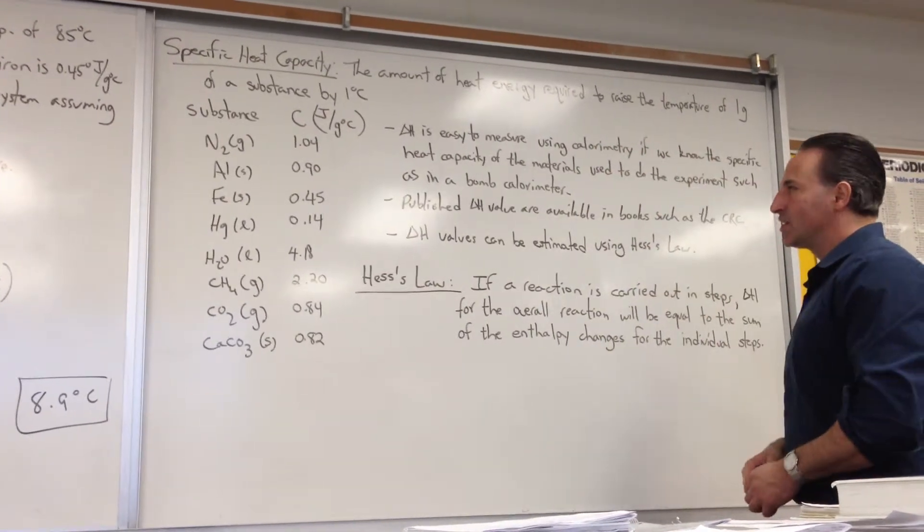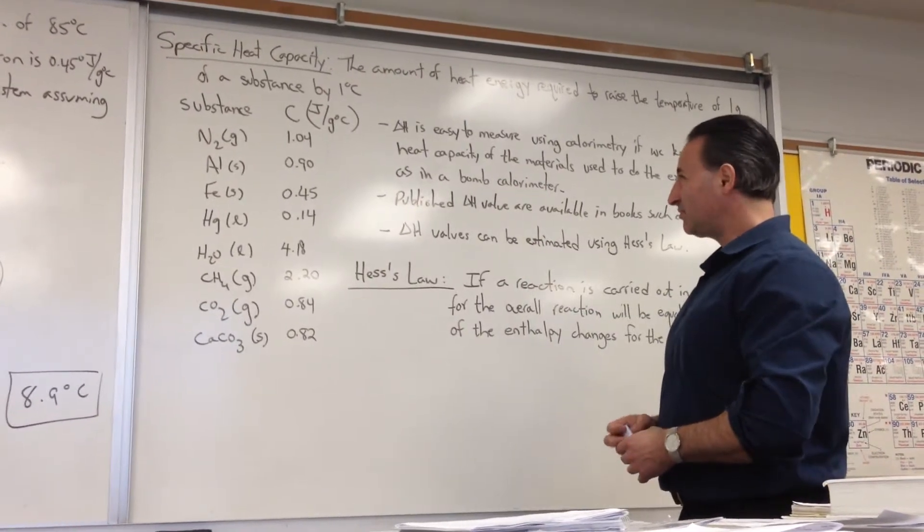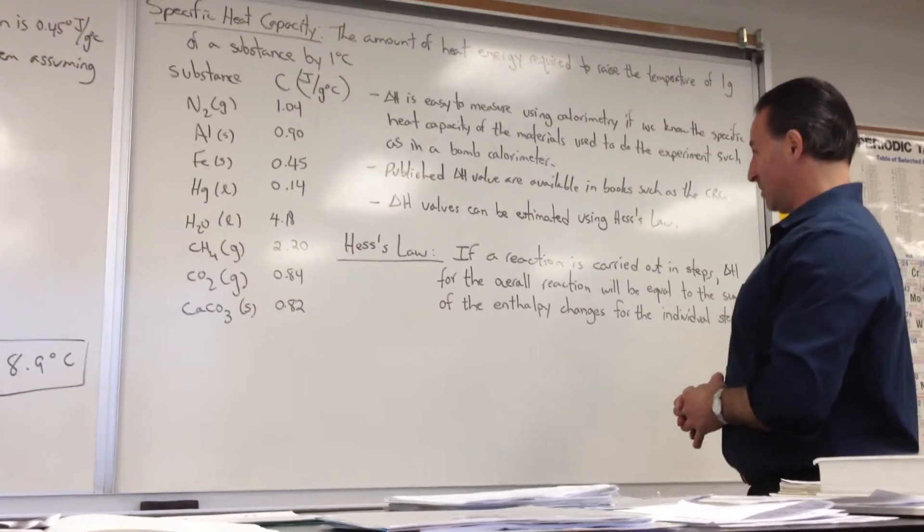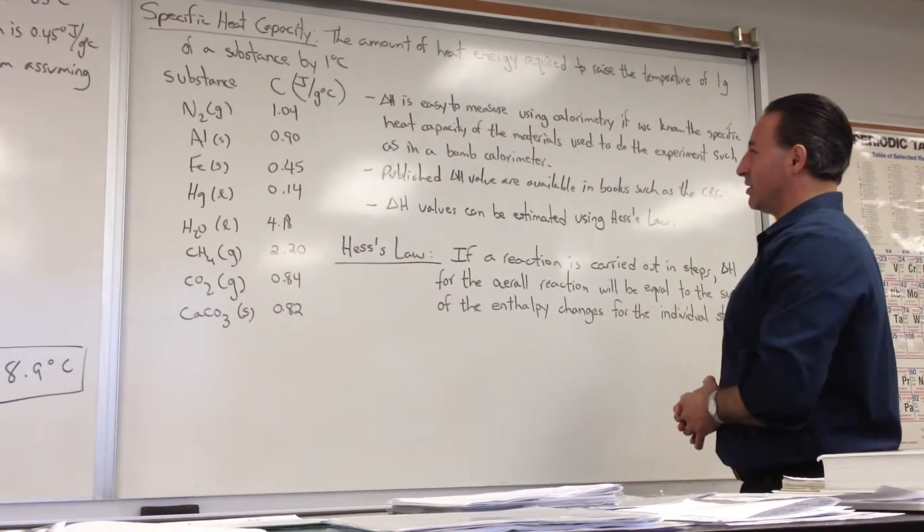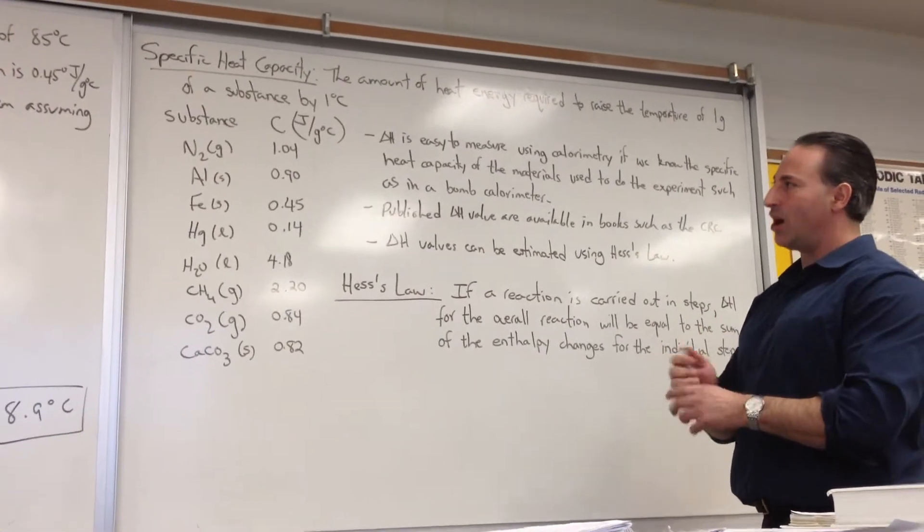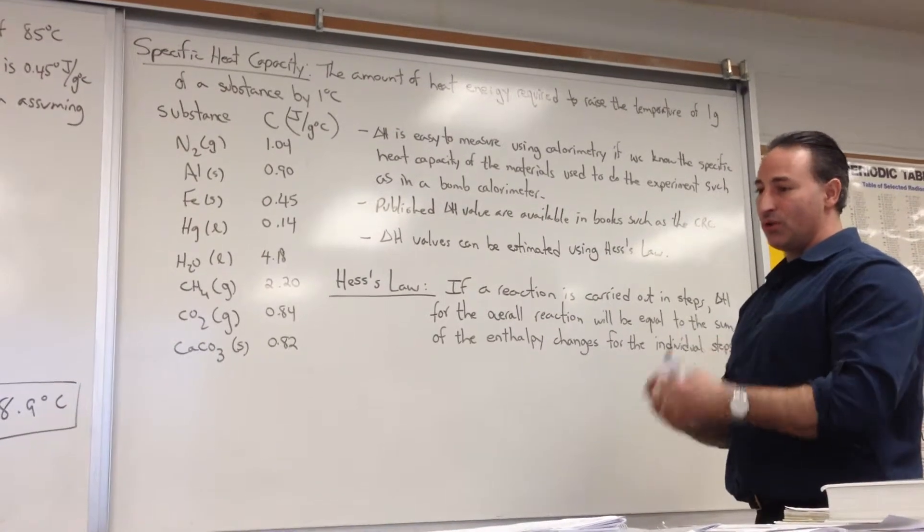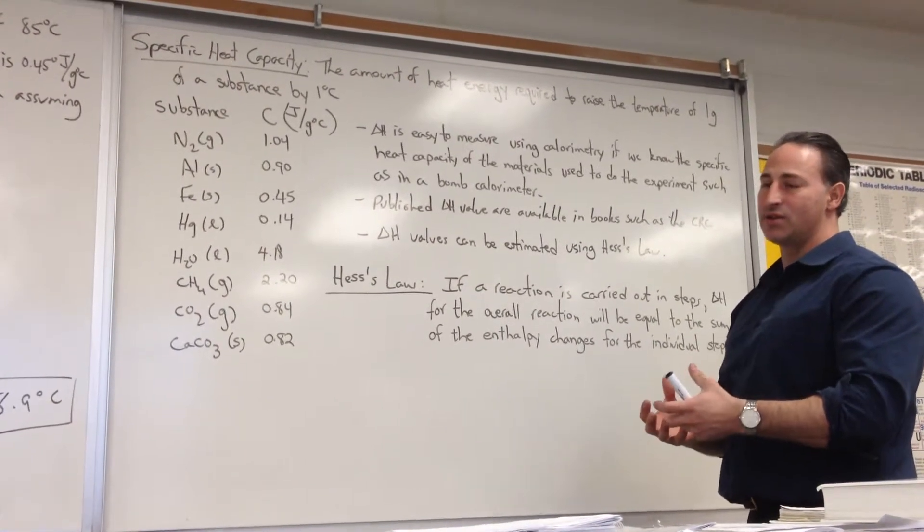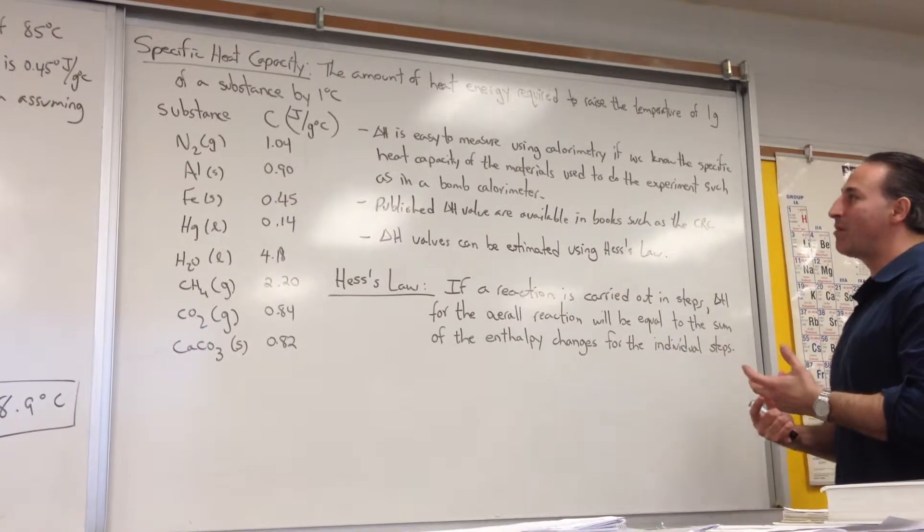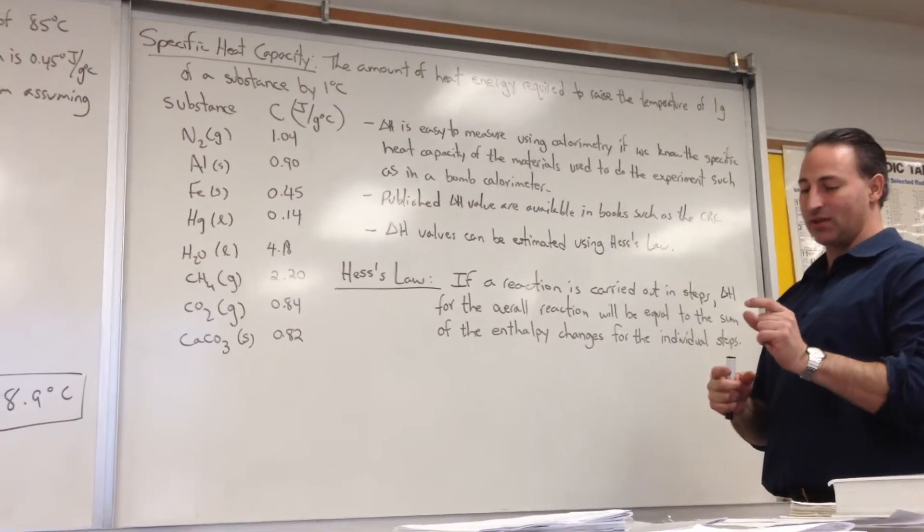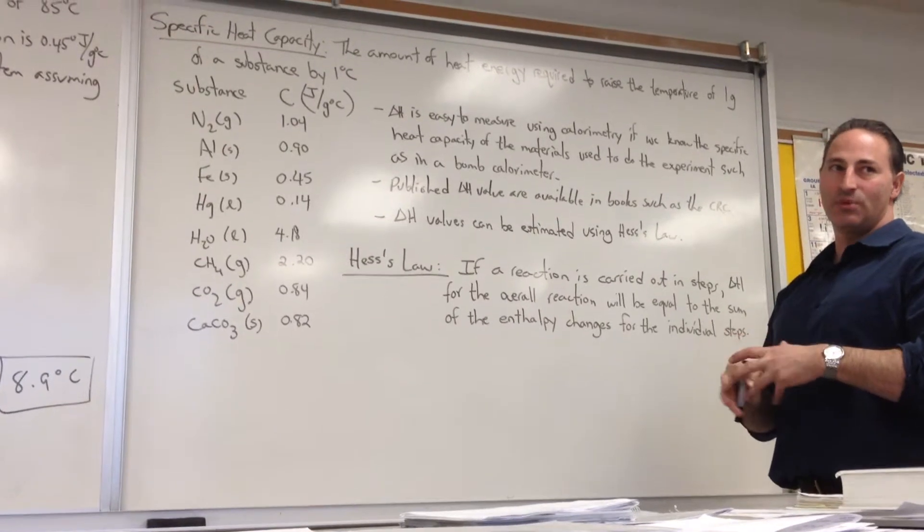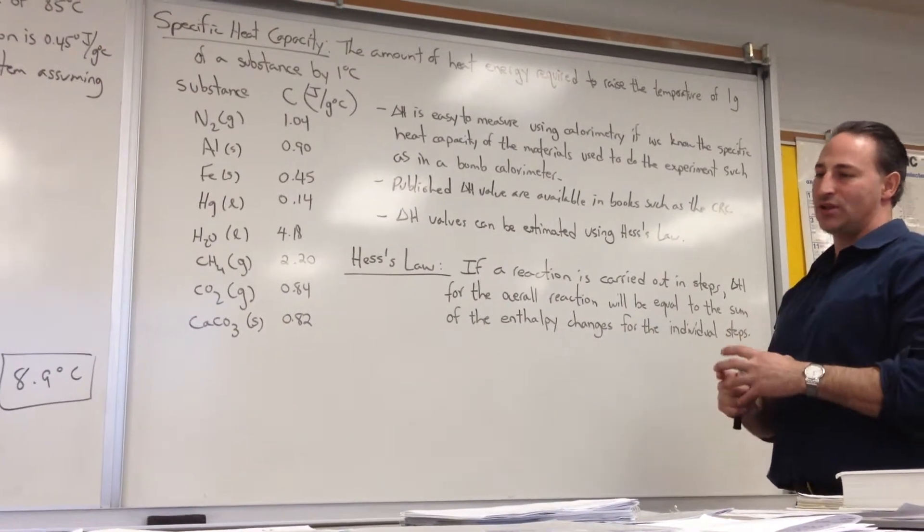These numbers, these values, help us to do calculations that involve enthalpy. Now, delta H or enthalpy is easy to measure using calorimetry if we know the specific heat capacity of the materials used to do the experiment, such as in a bomb calorimeter. A bomb calorimeter is basically a strong metal container with a screwable top that can be immersed in water. You can burn things in it in the presence of high concentrations of oxygen, so the substance burns completely, and then all the heat energy that's released from the chemical reaction in the bomb calorimeter, which doesn't actually explode, what happens is because it's constructed of very thick steel, it contains the so-called explosion.